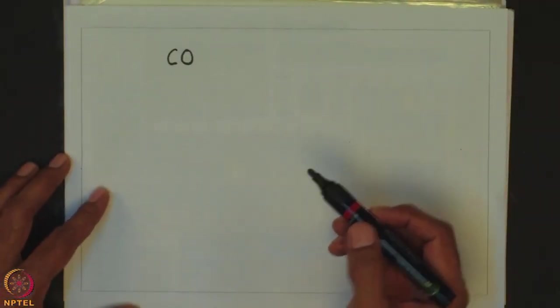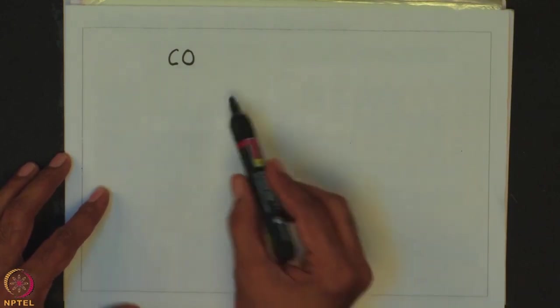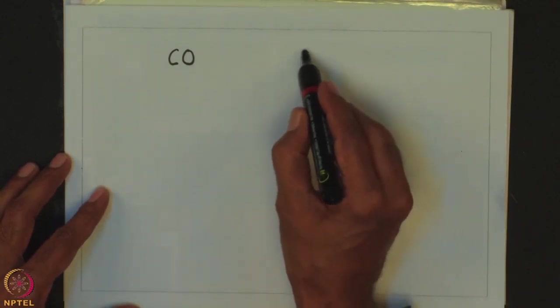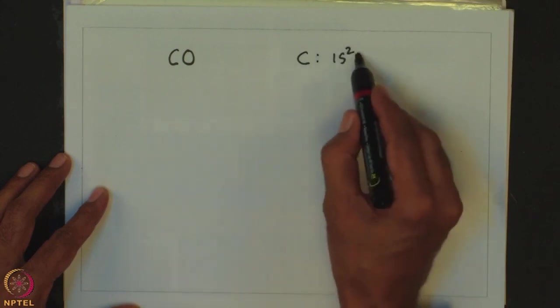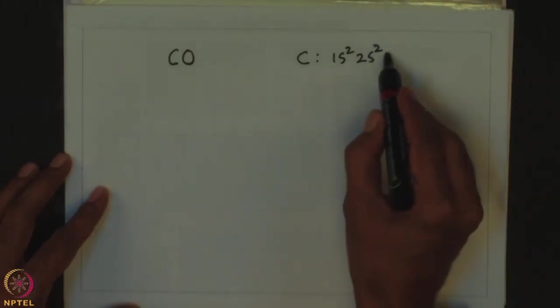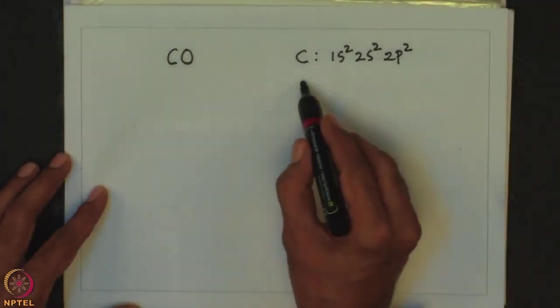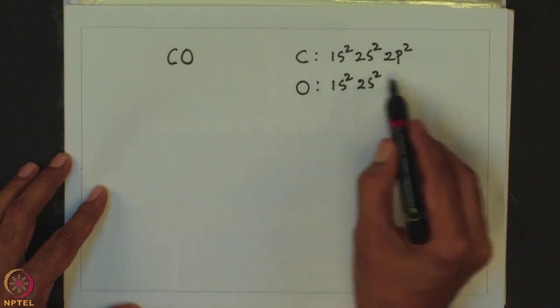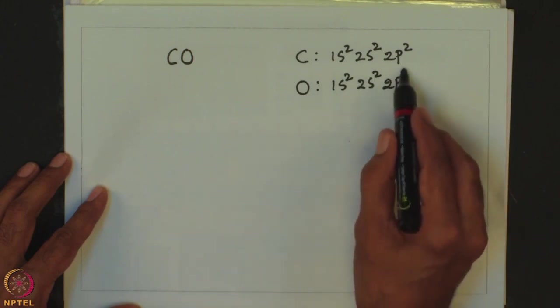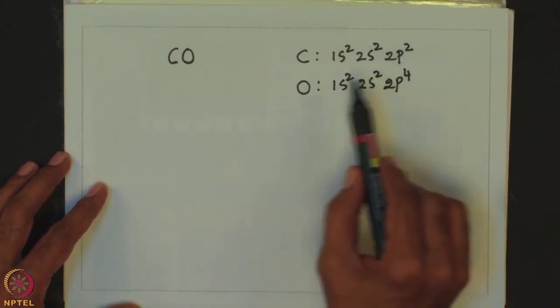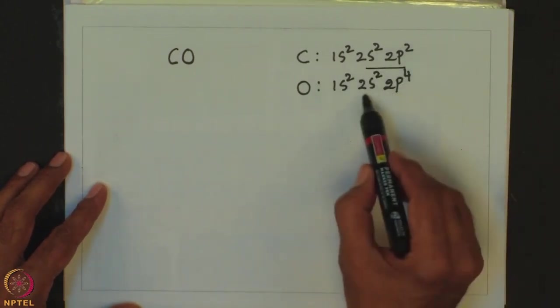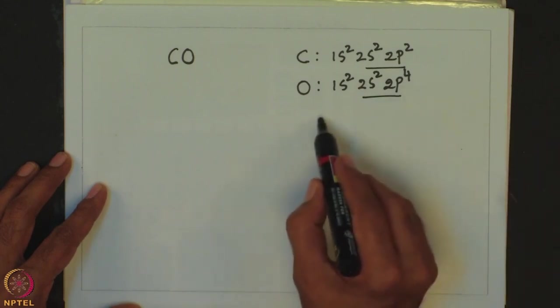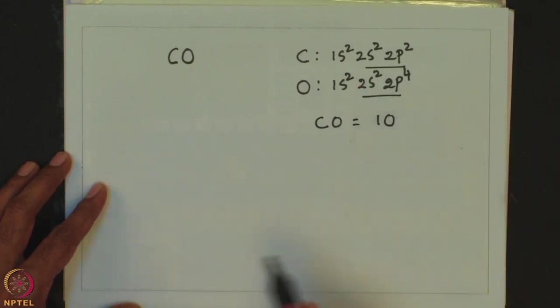Let us consider a simple example such as CO. In CO we have carbon and oxygen. The electronic configuration of carbon is 1s², 2s², 2p², and the electronic configuration of oxygen is 1s², 2s², 2p⁴. While writing the Lewis structure we consider only the valence electrons, so carbon contributes 4 electrons and oxygen contributes 6 electrons, giving a total of 10 electrons for CO.